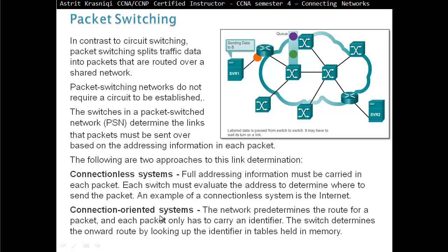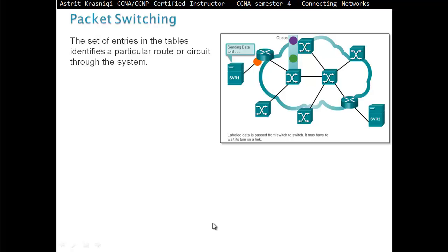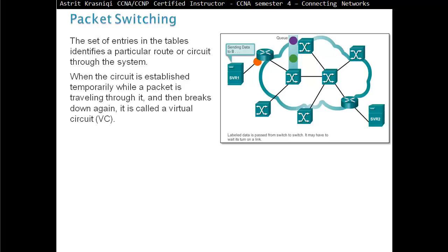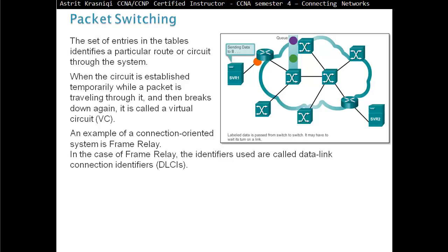The set of entries in the table identifies a particular route, a circuit through the system. When the circuit is established temporarily while the packet is traveling through it, and then breaks down again, it is called a virtual circuit or VC for short. An example of a connection-oriented system is frame relay. In the case of frame relay, the identifiers used are called data link connection identifiers, DLCI.